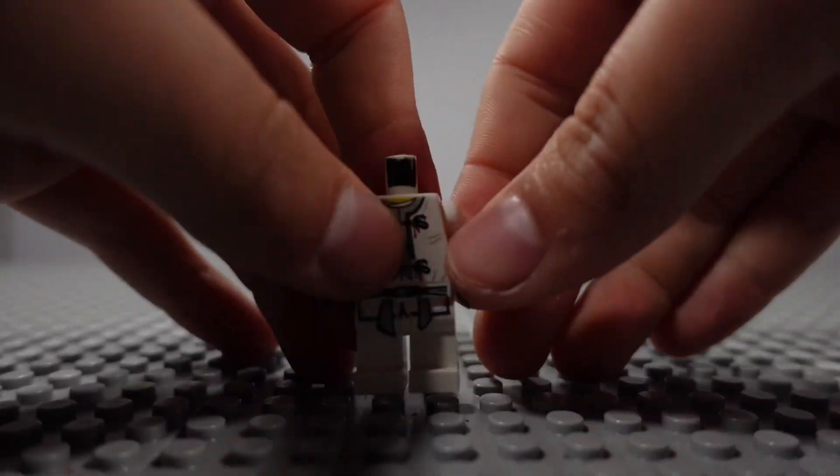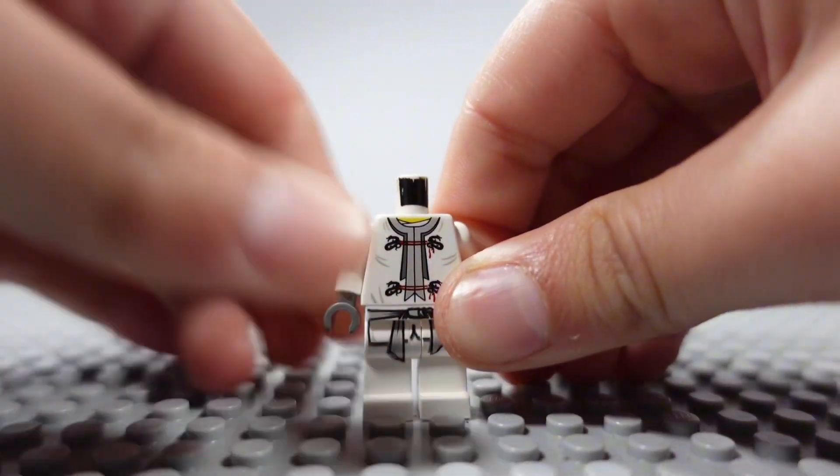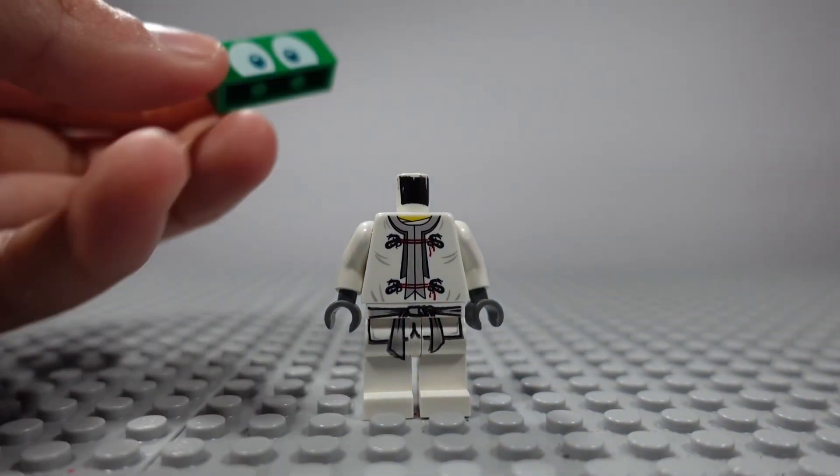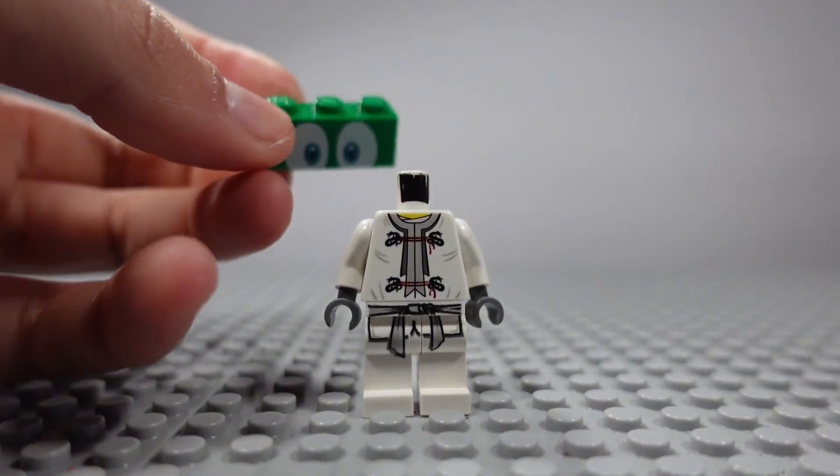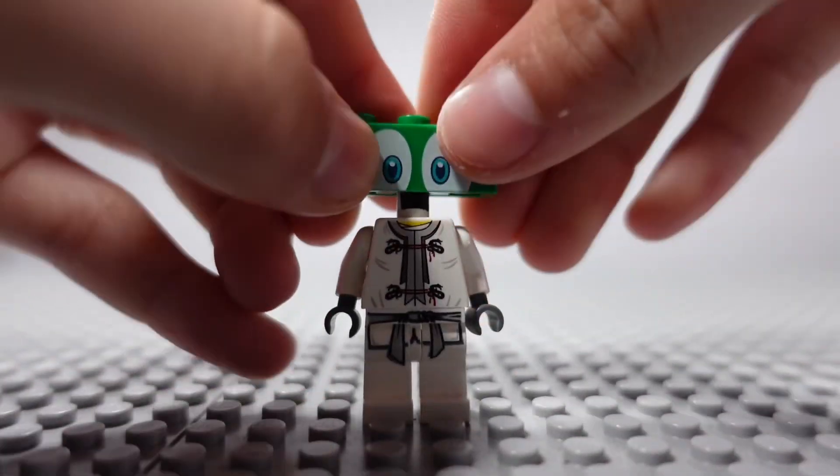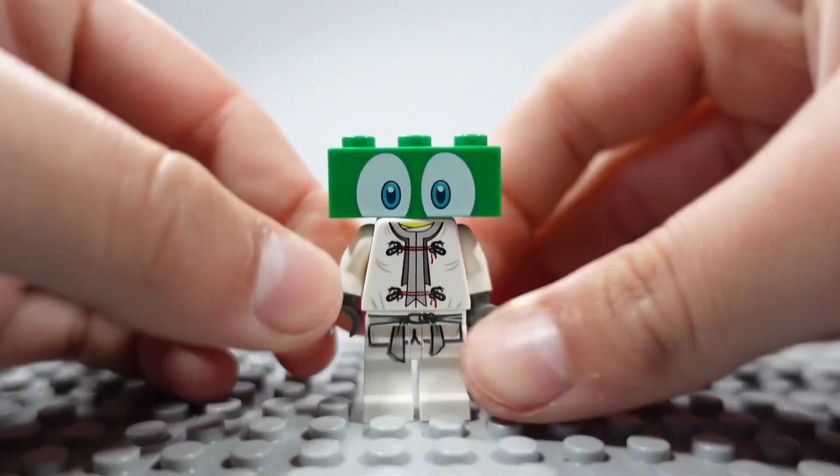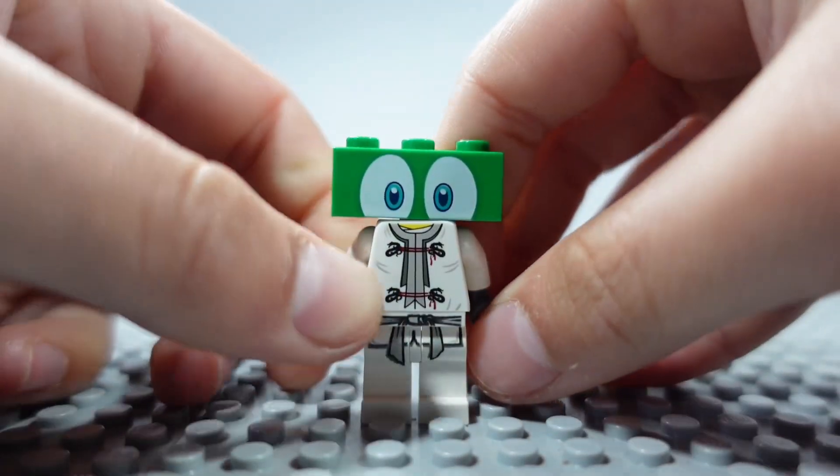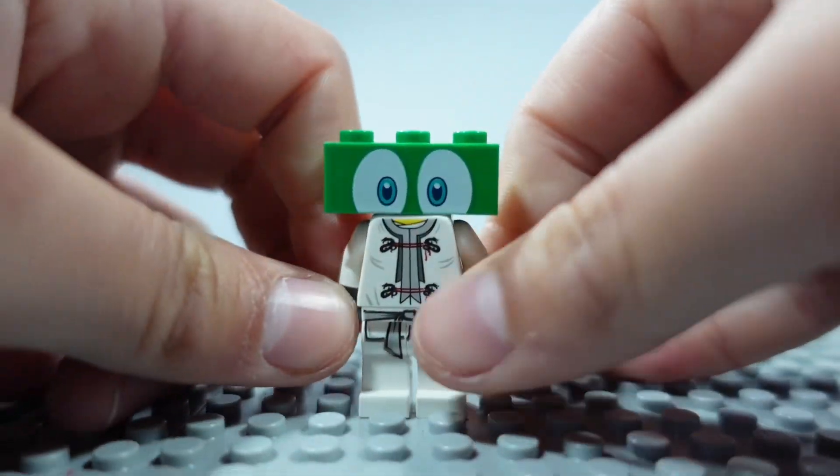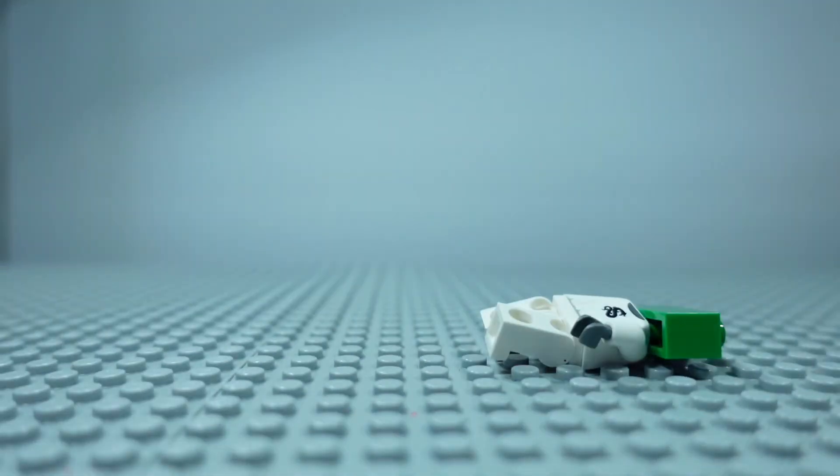If you take the Sensei Wu character from earlier and you get one of these pieces from a Mario set and you put it on, we've got something. Oh yeah.